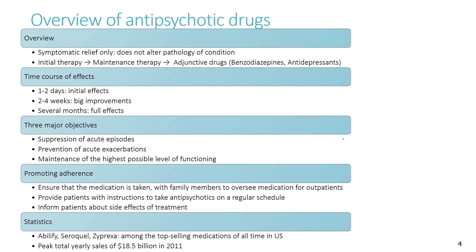Antipsychotic drugs only provide symptomatic relief — they do not alter the progression or pathology of schizophrenia. People with schizophrenia will never be cured but can be managed. The three major objectives of drug therapy are: suppress acute episodes, prevent future exacerbations, and maintain the highest possible level of functioning.